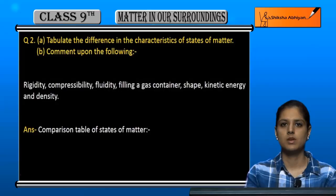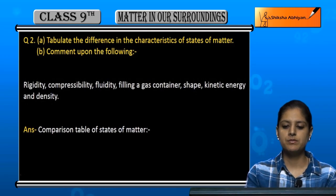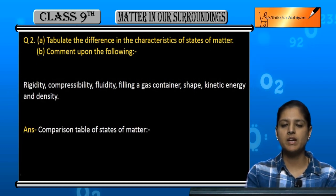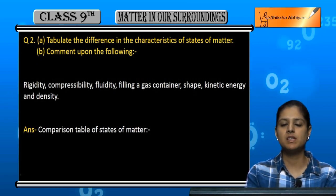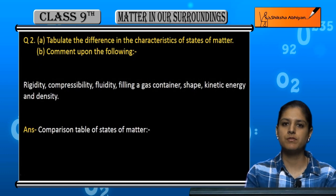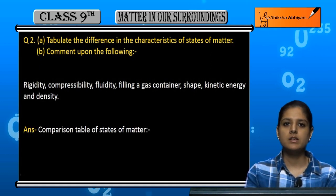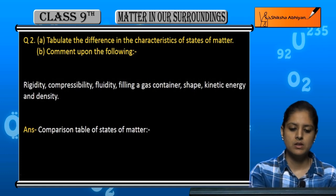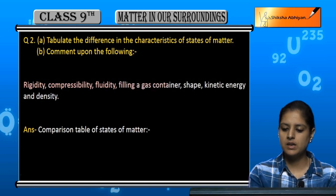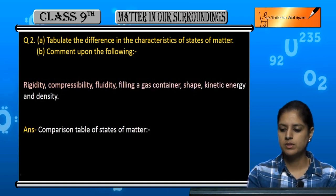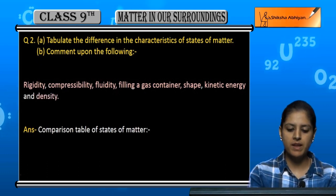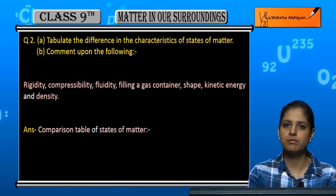Question number two: tabulate the differences in the characteristics of states of matter, and comment upon the following. We have to make a table of differences between the characteristics of solids, liquids, and gases. The second part gives us terms: rigidity, compressibility, fluidity, filling a gas container, shape, kinetic energy, and density — and we will comment on each of them.